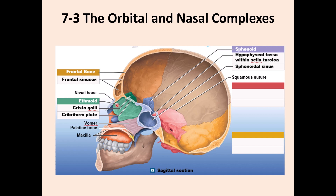Now looking at the nasal cavity from the midsagittal view: the perpendicular plate of the ethmoid bone forms part of the nasal septum, and the vomer makes the inferior part of the bony nasal septum. The hard palate, made by the maxilla and palatine bone, is visible here. The roof of the nasal cavity is made by the frontal bone, ethmoid, and sphenoid bone.